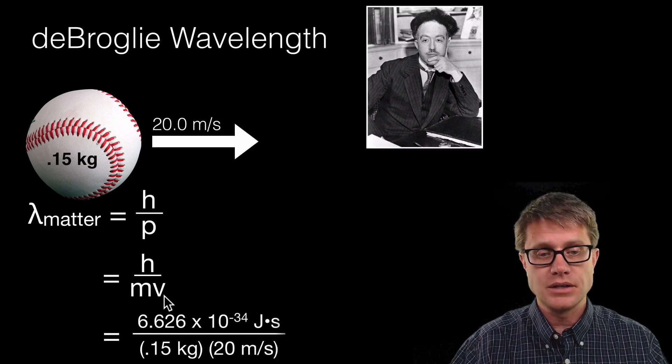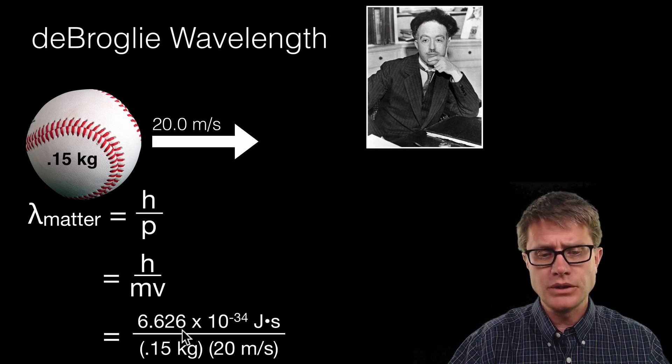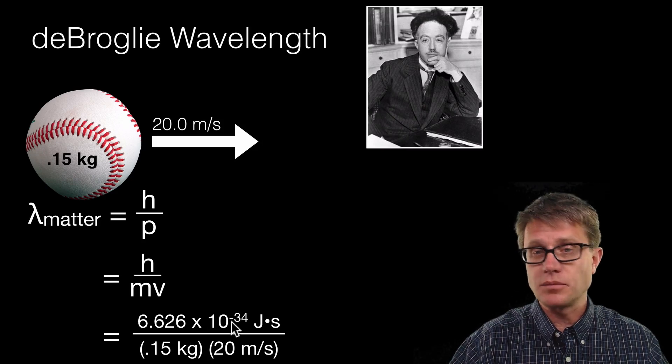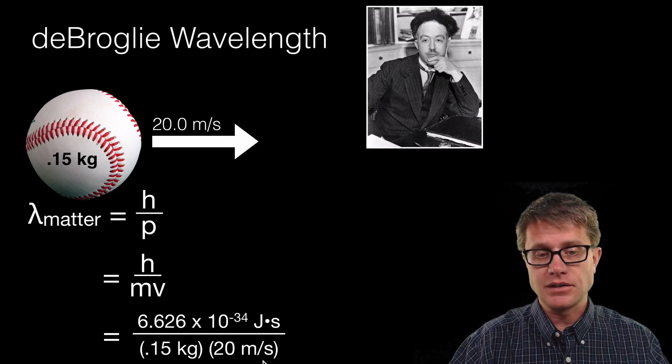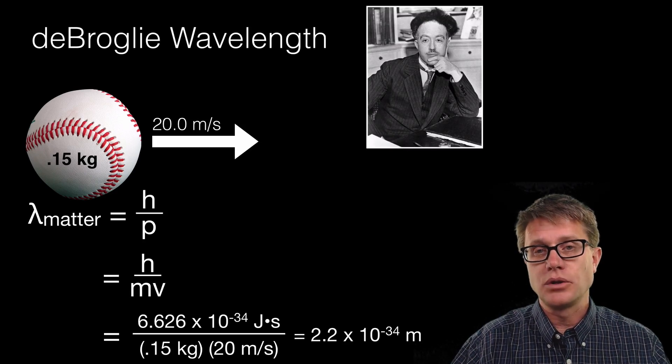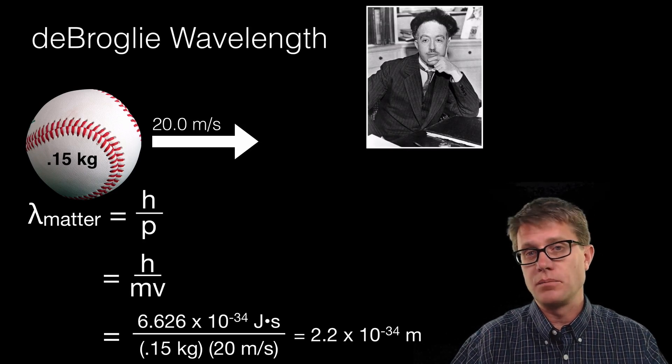So if we need to calculate de Broglie wavelength, we take Planck's constant, which is a really small number, divided by the mass times the velocity and we get a wavelength of 2.2 times 10 to the negative 34 meters.